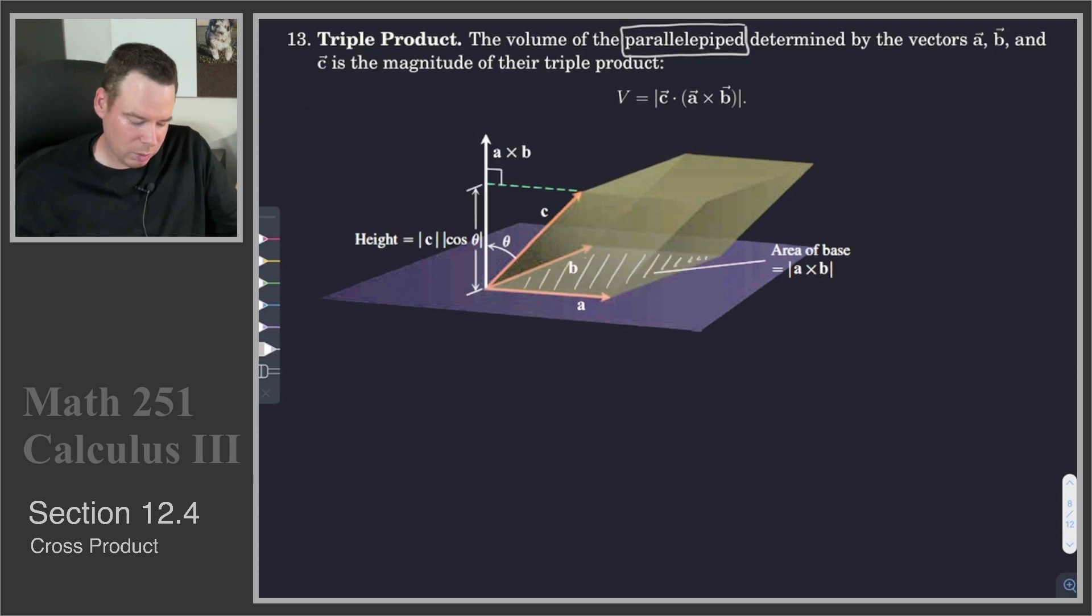Well, we compute the volume just like we would any other cylinder, is we take the area of a cross section and multiply it by its height. What is the area of a cross section? Well, in this case, it's the area of the base. So we've got our volume is going to be the area of the base, which is the magnitude of A cross B, that's the area of the parallelogram, times the height.